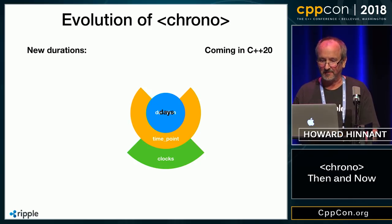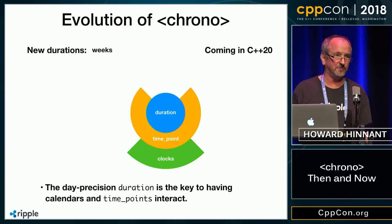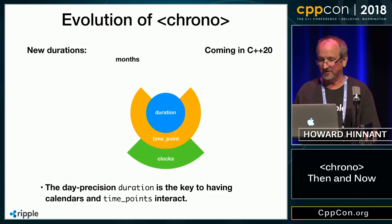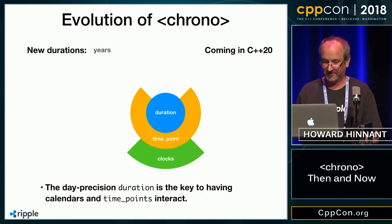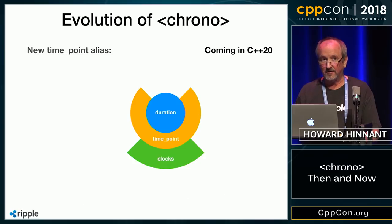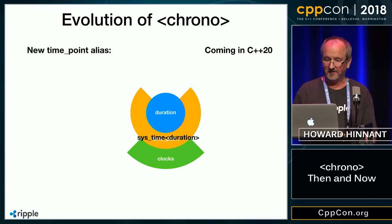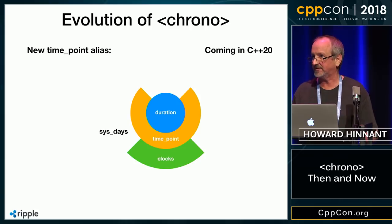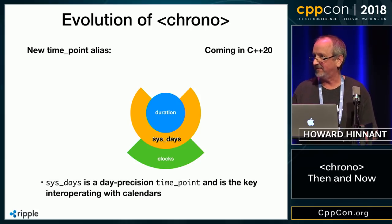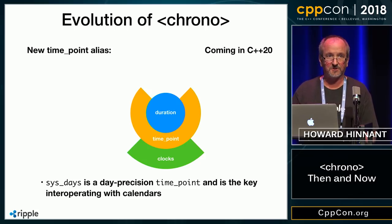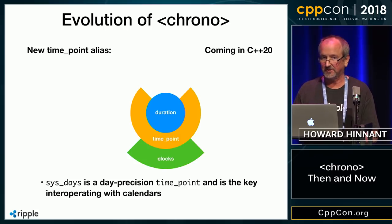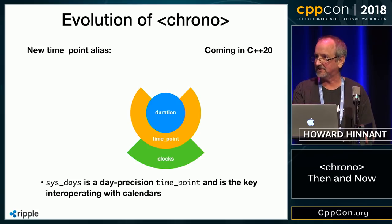Coming in C++20, we're going to add several new durations: days, weeks, months, and years. This will help us deal with calendars. We're also going to add some time point aliases — one called systime, which is just a fancy way of saying system clock time point but for an arbitrary precision. And one of those precisions is going to be called sysdays, which is nothing but a system clock time point with a precision of days. It turns out this is the Rosetta Stone for interoperating with different calendars.